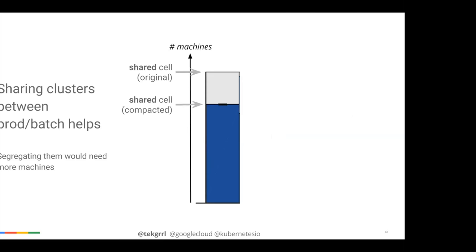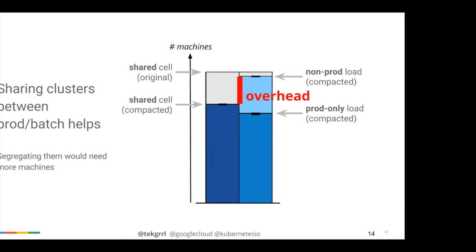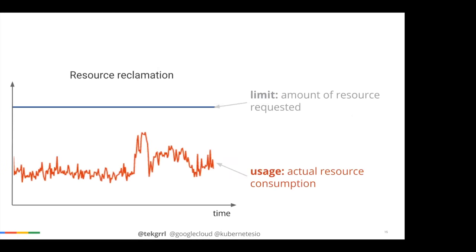That 25 percent savings is the key differentiator for running prod and batch together on the same machines. All of this is managed by Borg, our cluster scheduler. Another important concept is over-commit: when engineers schedule work onto Borg, they specify how much resource they believe they'll need — the limit. The limit is always higher than actual resource used, giving overhead in case of traffic spikes.